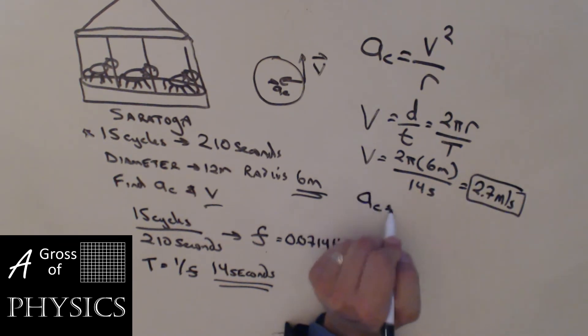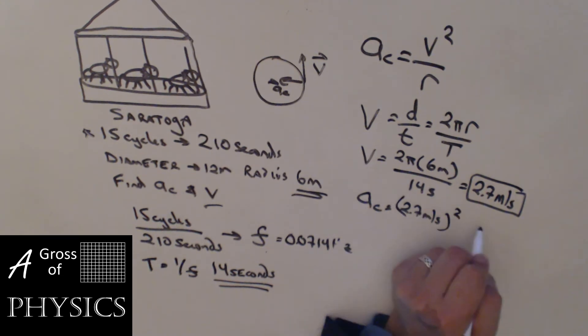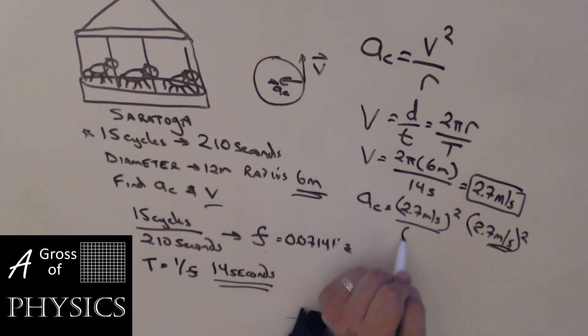Now if we take that number and we plug it in for the centripetal acceleration, 2.7 meters per second, the entire thing squared. Now watch out. If you just do 2.7 meters per second squared, that's going to look a lot like an acceleration. So watch out for that. That's why I put it in parentheses so I know the whole quantity is squared, not just the seconds. And of course because we have an acceleration to begin with, and then finally the radius was 6 meters. So 2.7 squared divided by 6, the centripetal acceleration is 1.21 meters per second squared. So as far as this problem goes, the centripetal acceleration is 1.21 meters per second squared, the velocity is 2.7 meters per second, and I drew one of the most realistic looking carousels in the history of mankind.